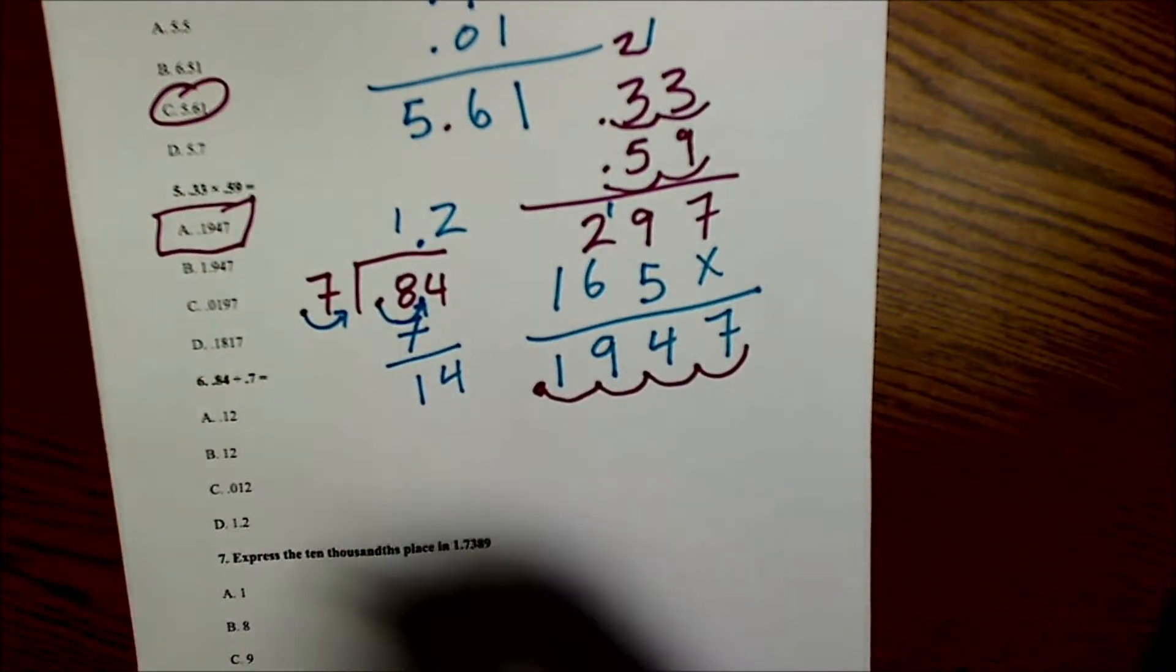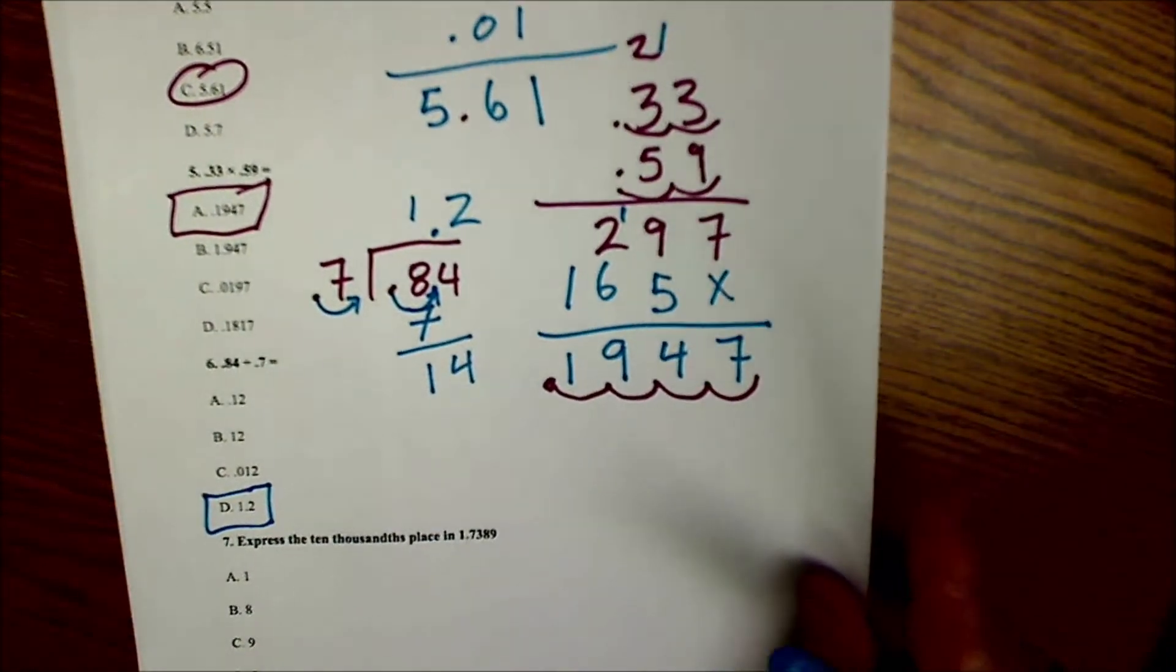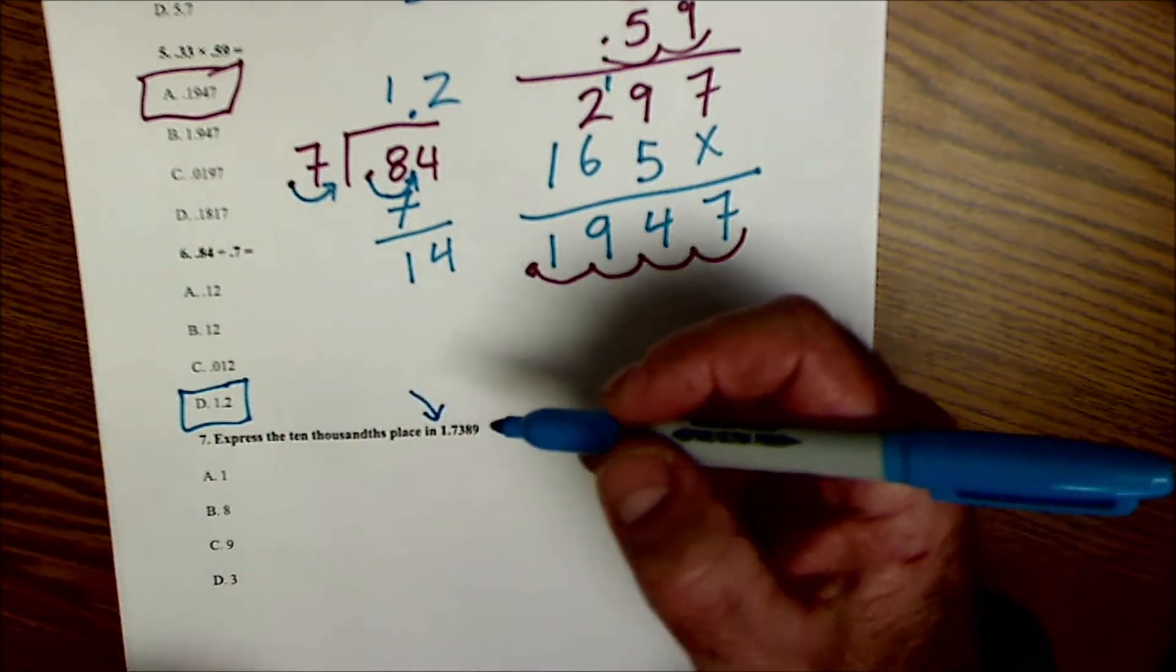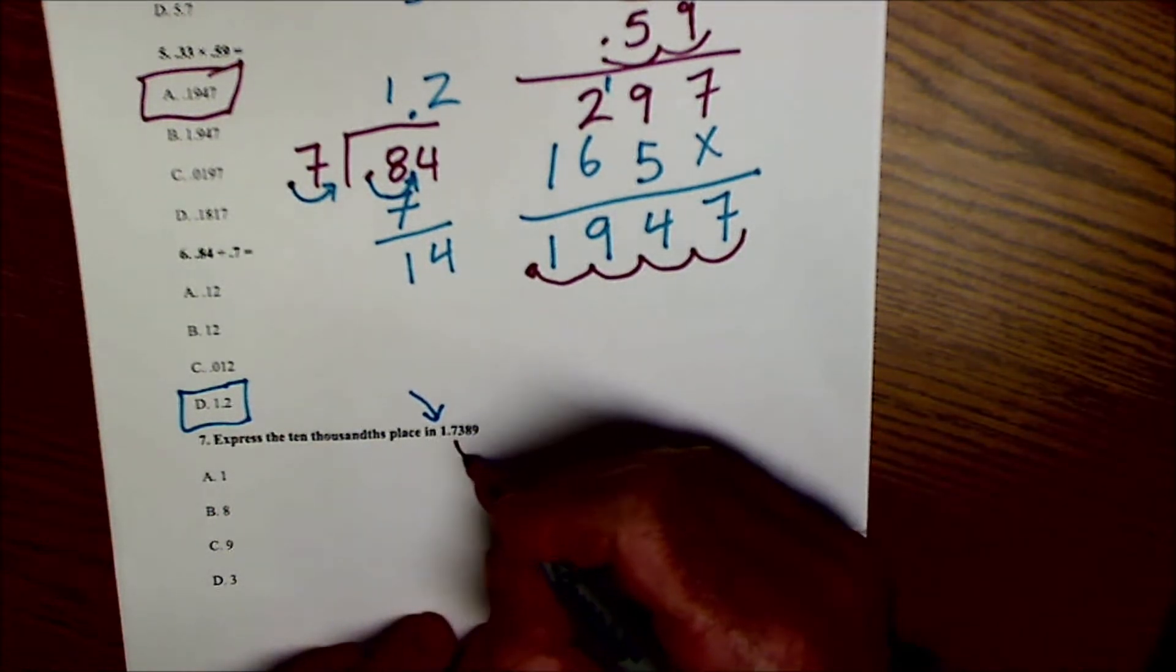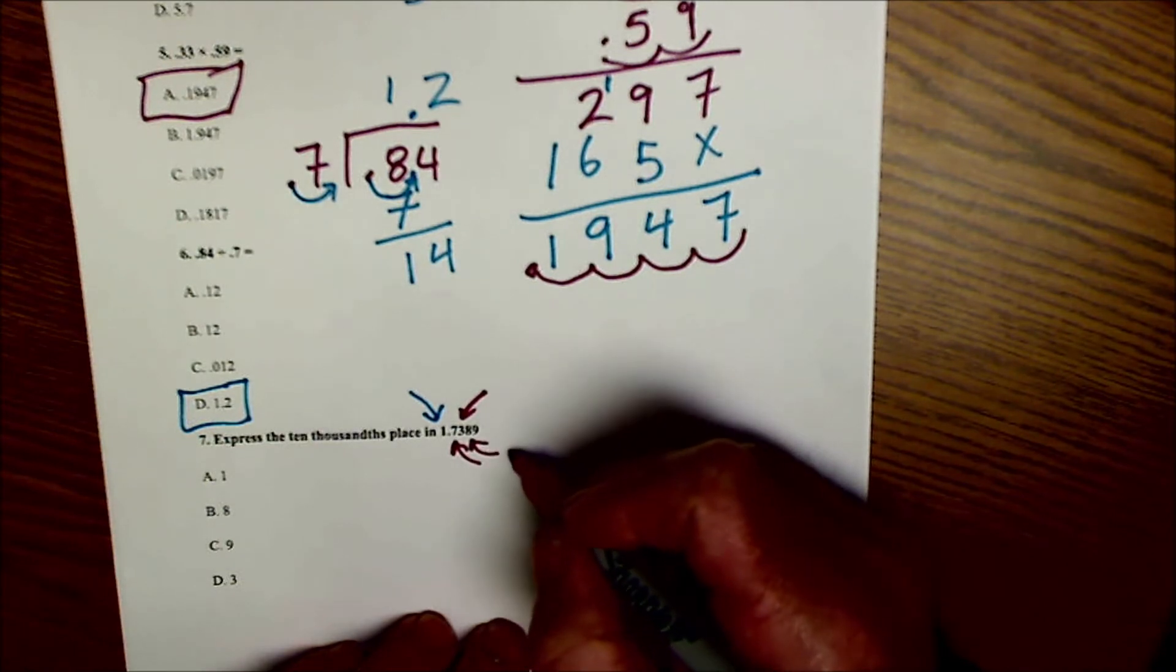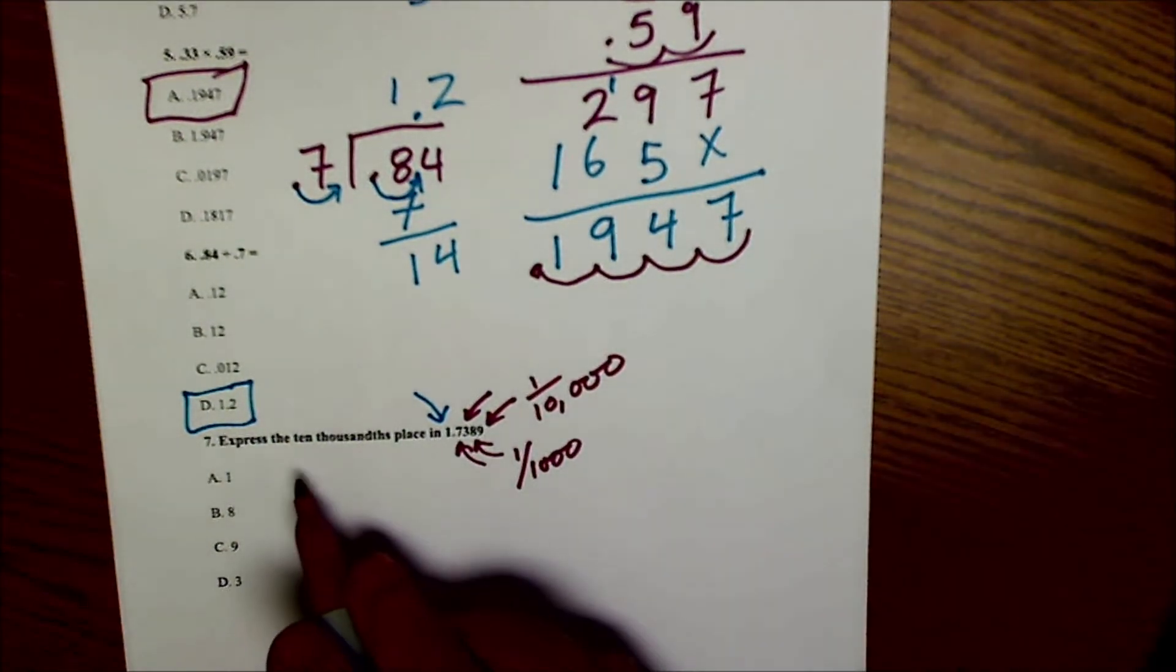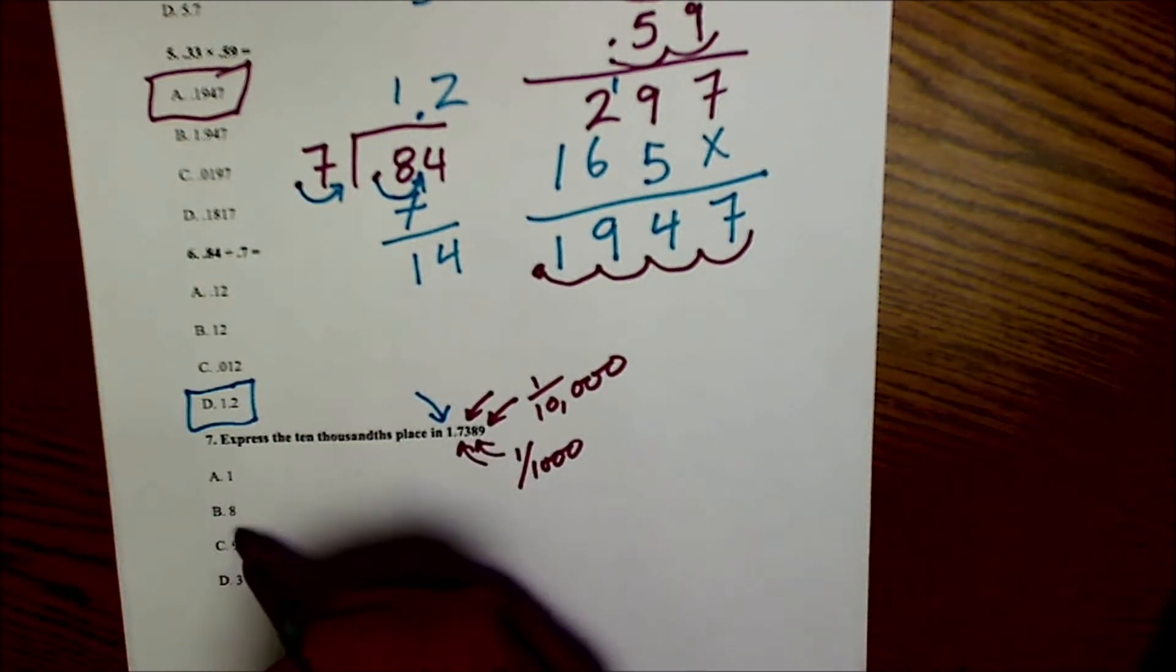Number 7 down here, express the 10 thousandths place as place values. This right here is 1's place on the left side of the decimal. And then on the right side of the decimal, this is my 1 tenth, 1 hundredths, that 8 is my 1 one thousandths, and that 9 is my 1 ten thousandths place. So express the 10 thousandths place, it's gonna be that 9 right there, and that would be answer C.